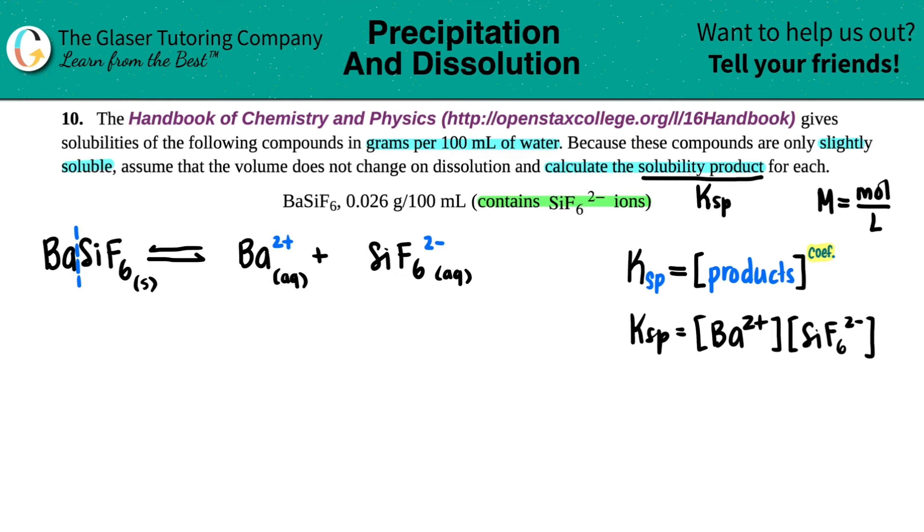So I'm just going to do that on the bottom. 0.026 grams of BaSiF6, and this is all over 100 mils. I have to take the grams and convert it into moles. I also have to take the mils and convert it into liters, but we work with one unit at a time. Let's work with the grams. Let's convert grams to moles. So it'll be times by a ratio. We throw the grams on the bottom, moles of BaSiF6.